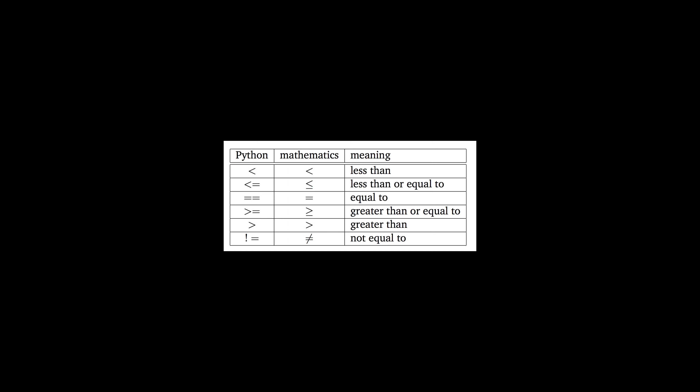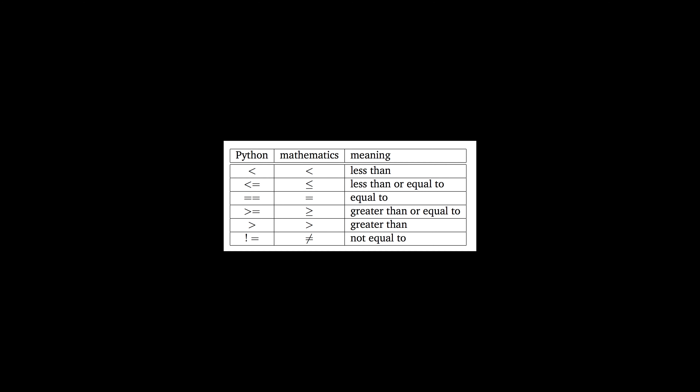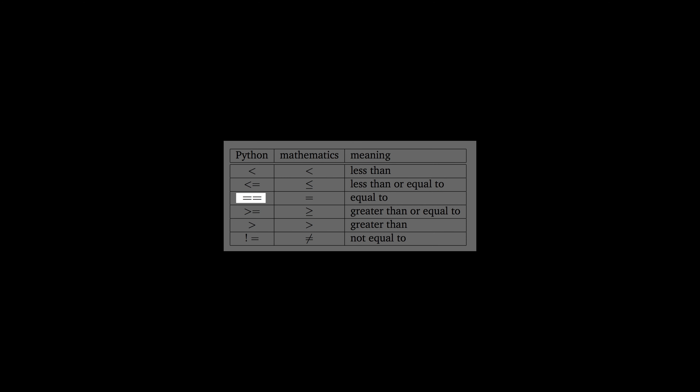This diagram shows the comparison operators used for conditions. Since we need to enter them using keys on the keyboard, we do not write them as we commonly do in mathematics. Less than or equal and greater than or equal are written with two consecutive characters. You can remember the order by how you say them - you always say 'less than or equal,' so the less than sign is first and then the equal sign. Since we already use the single equal sign for the assignment operator, when we want to check if two expressions are equal, we use two consecutive equal signs.